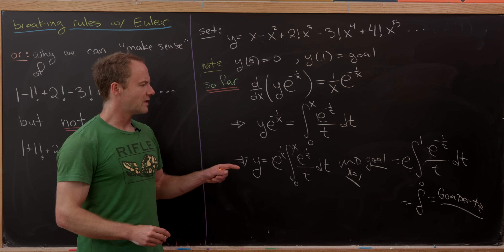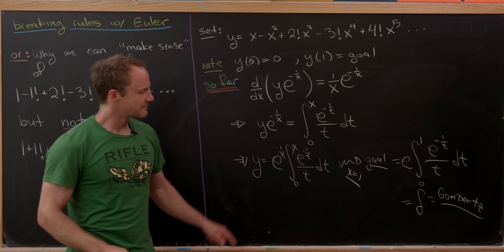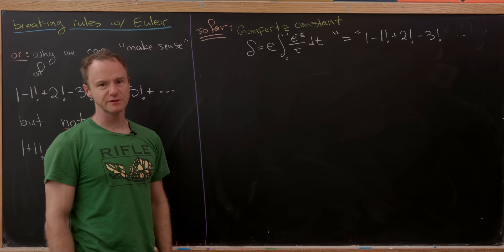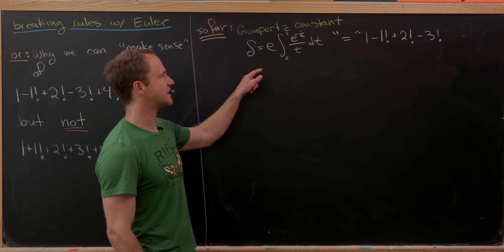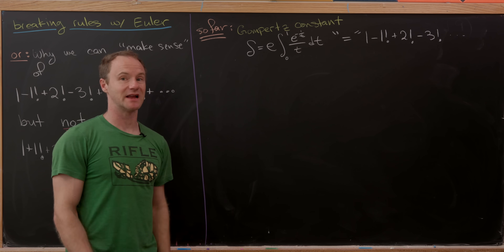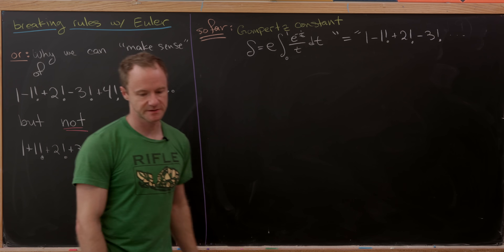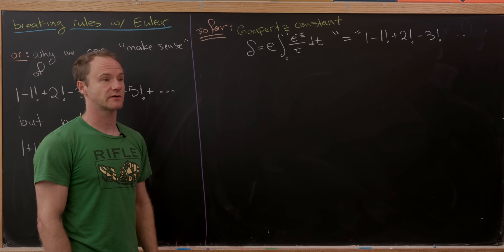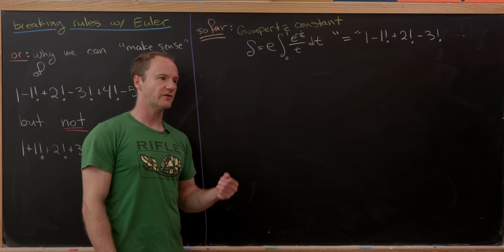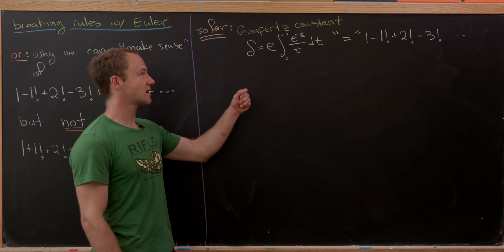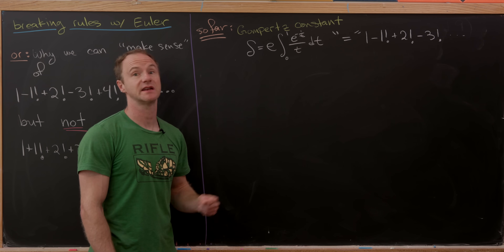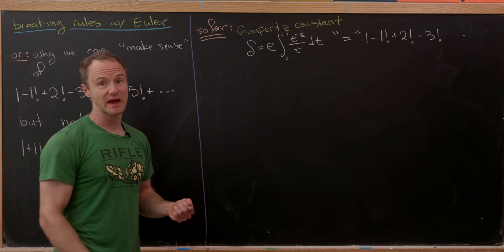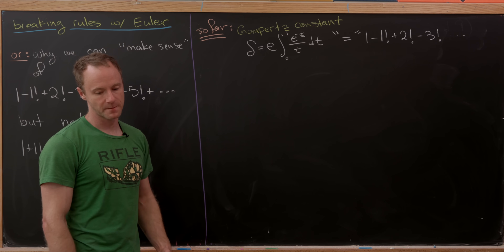Before moving on to the second series, let's look at a couple more representations of this constant. There are some interesting facts: it's unknown whether the Gompertz constant is irrational. However, it has been proven that at least this constant or the Euler-Mascheroni constant gamma is transcendental — so at least one of them is, and we probably believe both are.